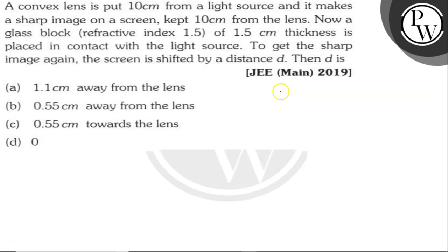This is the convex lens. This is our object. This distance is 10 cm. This is our image. So this distance is 10 cm.